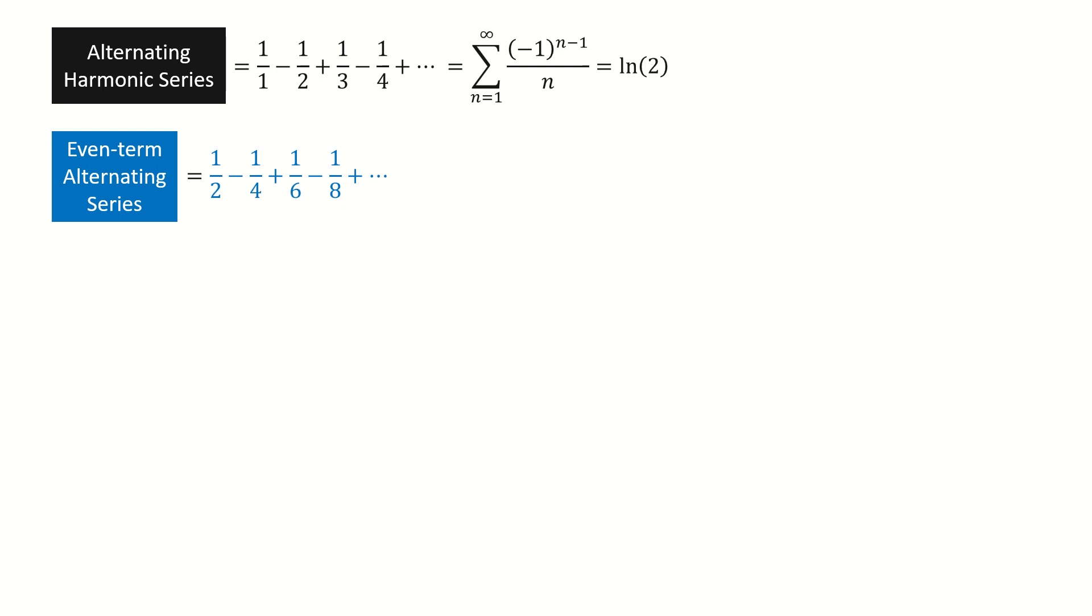First, let's calculate the even-term alternating series. We write it into a compact form. Then we take one half out of the series. Now we plug in the result. So we are done for the even-term alternating series.